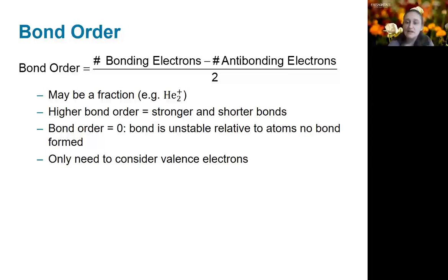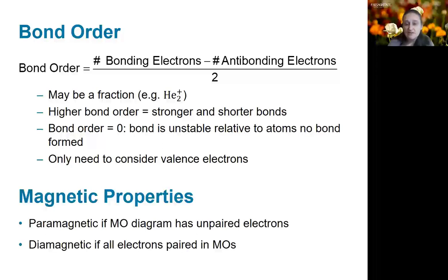As with valence bond theory, in molecular orbital theory it is only necessary to consider the valence electrons, as the core electrons will always be in orbitals that are both bonding and anti-bonding, and so they do not contribute to the overall bond. We can also use MO theory to determine the magnetic properties of molecules. If there are unpaired electrons, the molecule will be paramagnetic, and if all spins are paired, it would be diamagnetic.